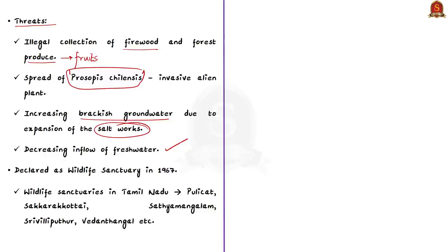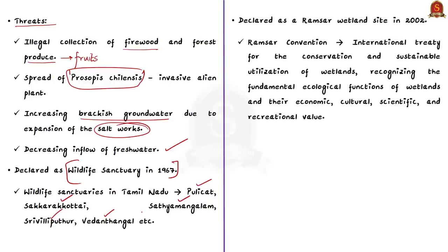Because of its importance, Point Kalamir was declared as a wildlife sanctuary in the year 1967. Other wildlife sanctuaries in Tamil Nadu include Pulicat Wildlife Sanctuary, Sakara Kottai Wildlife Sanctuary, Satya Mangalam Wildlife Sanctuary, Shrivilliputtur Wildlife Sanctuary, and Vedanthangal Wildlife Sanctuary. These wildlife sanctuaries are most often referenced in exams, so you should know that they are situated in Tamil Nadu.